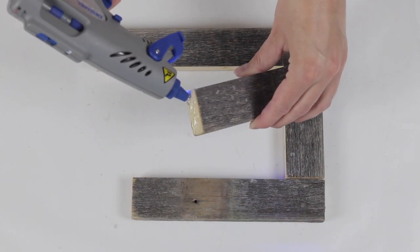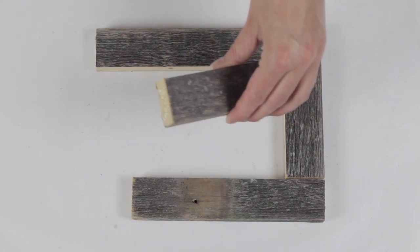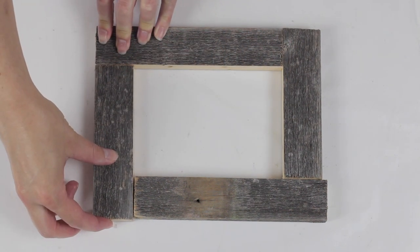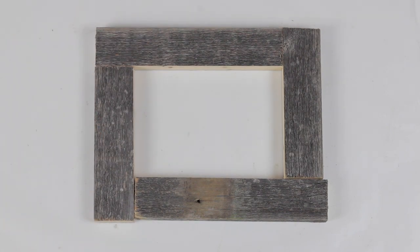Apply a bead of Gorilla hot glue to one end of each board, and then press it against the edge of the adjoining board. Allow the glue to cool for several minutes before moving the frame.